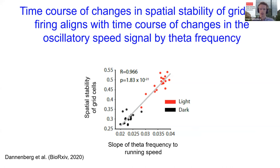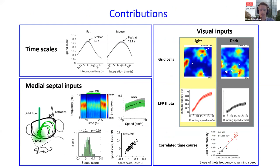Consequently, the spatial stability of grid cells was highly correlated with the slope of the local field potential theta frequency versus running speed relationship, which we interpret as an oscillatory speed signal. Taken together, this data indicates a link between the speed modulation of local field potential theta frequency and the stability of grid cell firing.